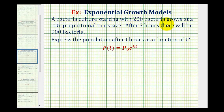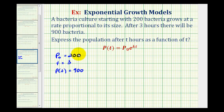We're starting with 200 bacteria, which means p sub zero is equal to 200. After three hours there will be 900 bacteria, so when t equals three the population p of t is equal to 900. We'll substitute these values into our exponential function and solve for k, giving us 900 equals 200 times e raised to the power of three k.